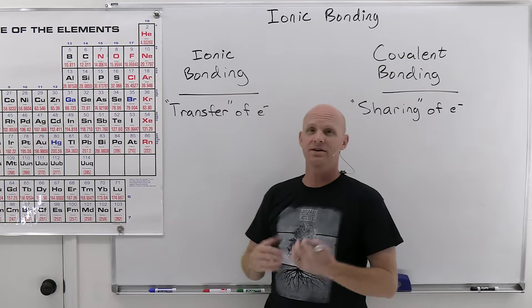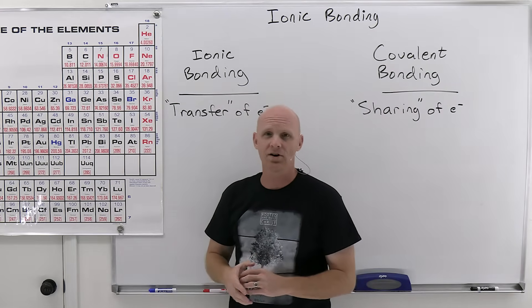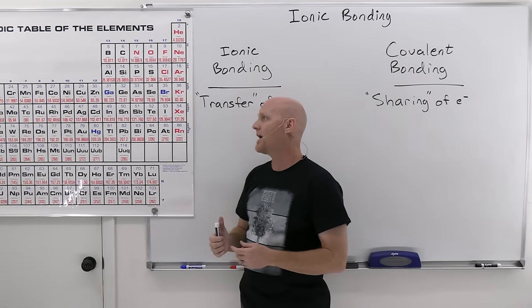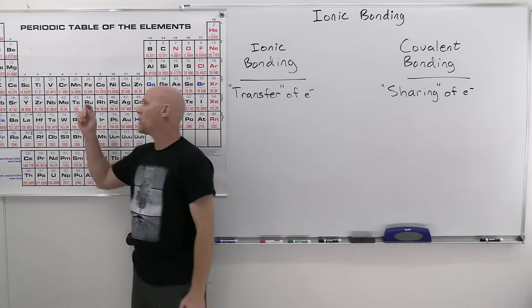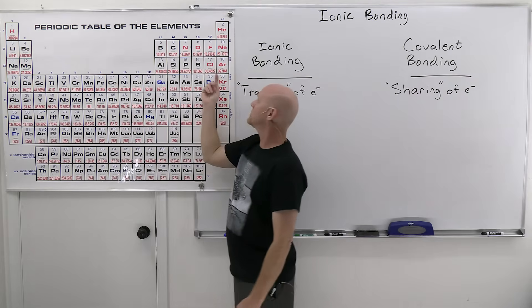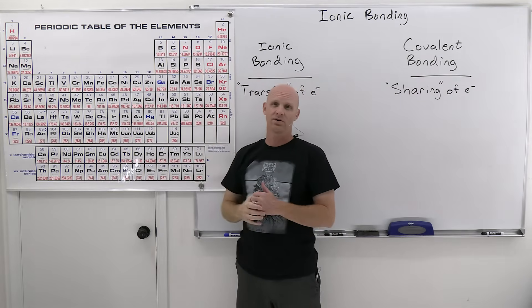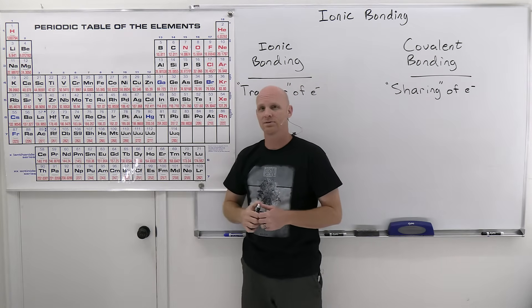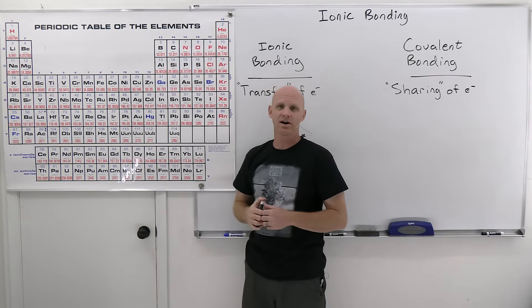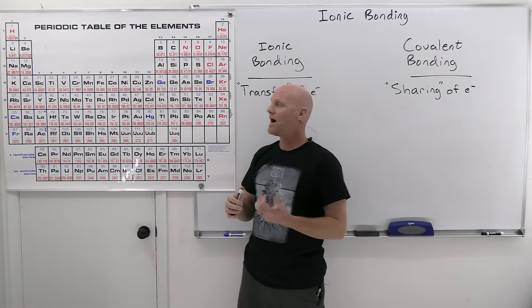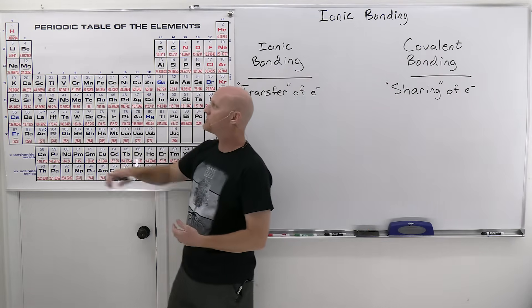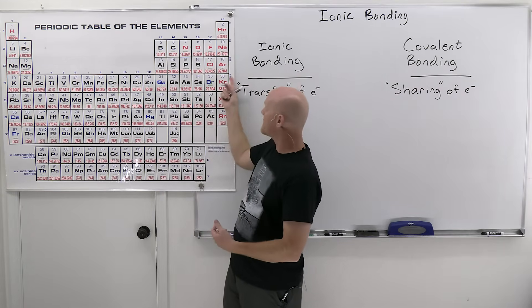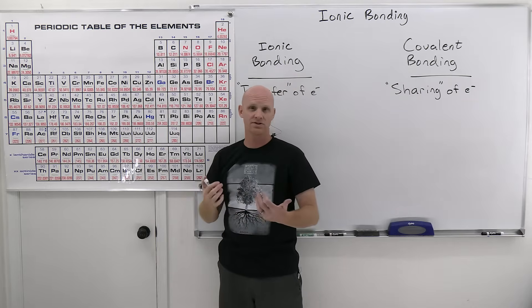The most famous ionic compound is probably NaCl, sodium chloride. Sodium has one valence electron, and chlorine has seven valence electrons. Later in this chapter we'll learn the octet rule, and we'll see that sodium is going to lose that valence electron, giving it a filled octet of the previous shell, and chlorine gains that electron to look like it has a filled octet of its current shell.